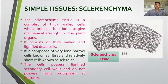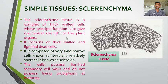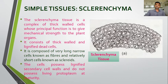The fourth simple tissue is sclerenchyma. We now go towards greater complexity of tissue, from simple towards complex, because after sclerenchyma we will start the complex tissue. The sclerenchyma tissue is a complex of thick-walled cells whose principal function is to give mechanical strength to the plant organs. The main function of collenchyma and sclerenchyma is to give mechanical support to plant organs like root and stem. Sclerenchyma consists of thick-walled and lignified dead cells — in collenchyma the cells are living, but sclerenchyma cells are dead.